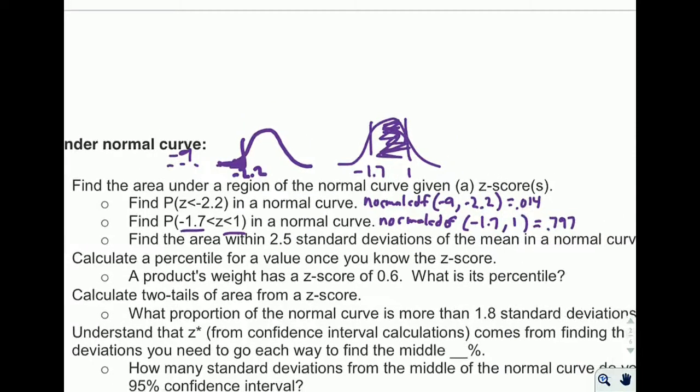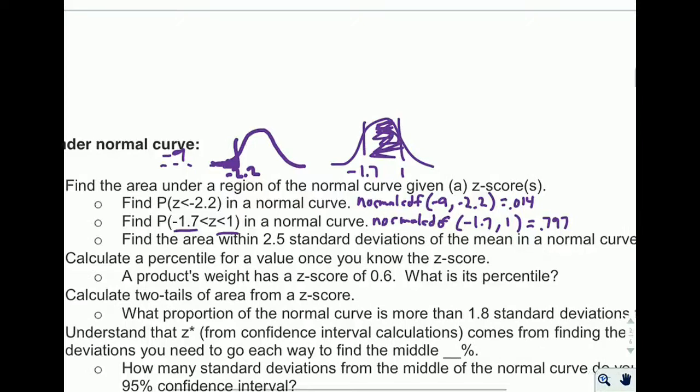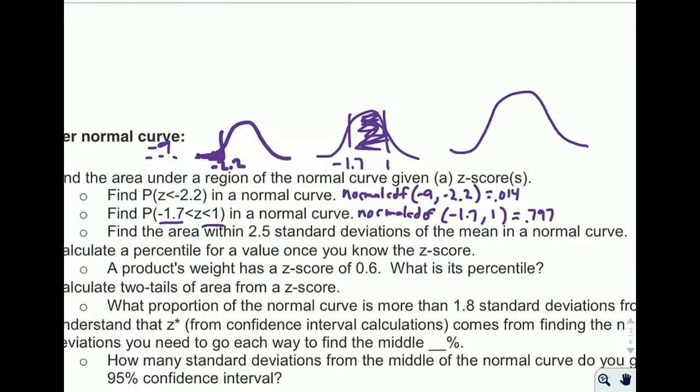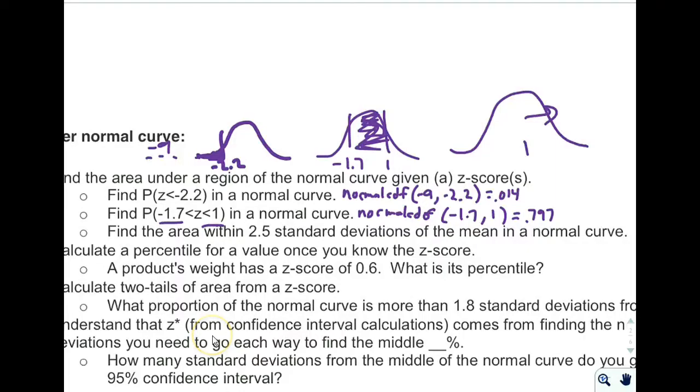Last one on this thing says, find the area within 2.5 standard deviations of the mean. To find within, I need to start from the middle and go out 2.5 over here. I need to go back 2.5, negative 2.5 over here. And I want to find the area trapped within those two. Now, that's going to be most of the normal curve. I'm thinking 99% type of thing.